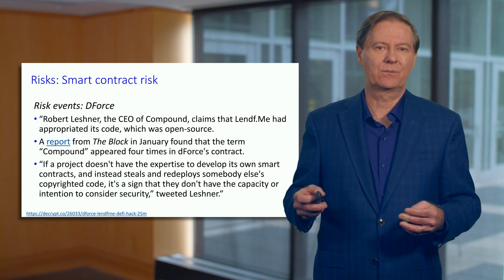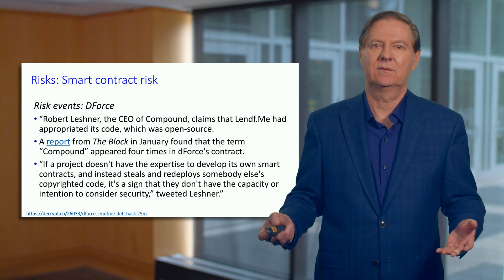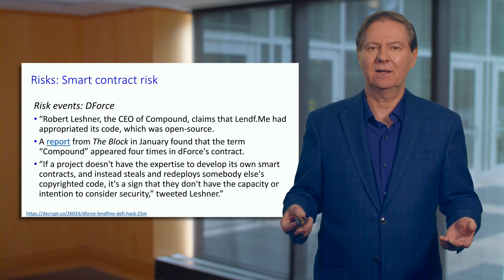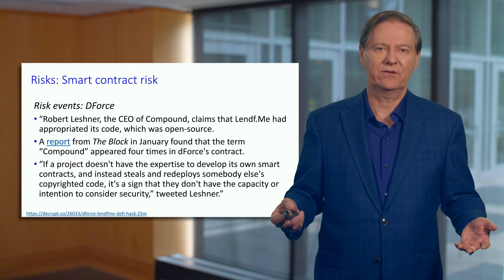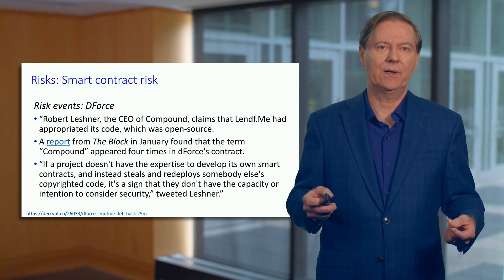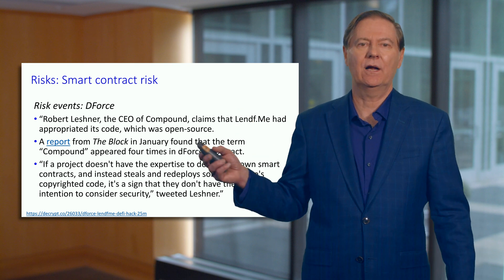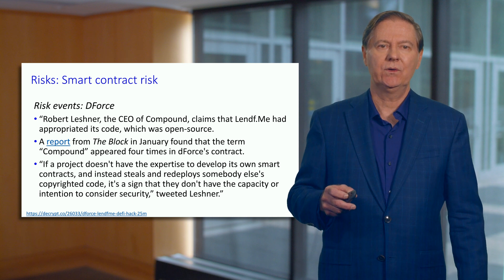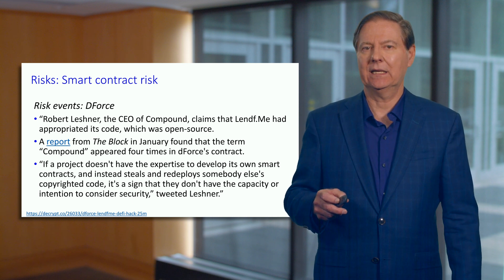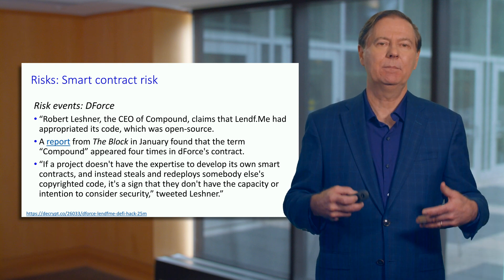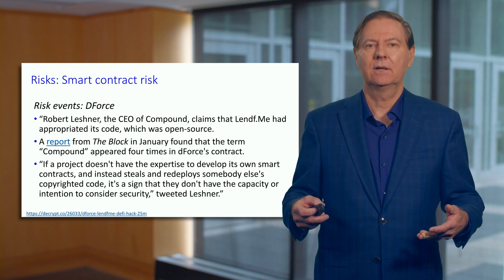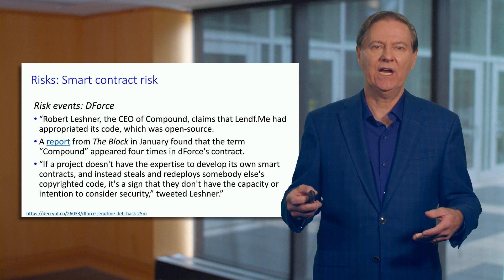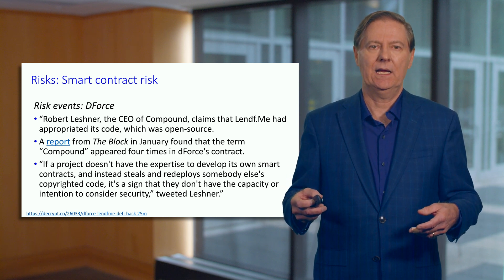Robert Leshner's quote: 'If a project doesn't have the expertise to develop its own smart contracts and instead steals and redeploys someone else's copyrighted code, it's a sign that they don't have the capacity or intention to consider security.' The copyright argument is debatable since this is open source and it's a global situation, but everything else he says is spot on — a group unable to build a smart contract from scratch, grabs the contract, makes minor changes, and they're off and running.